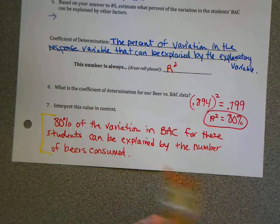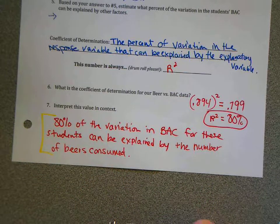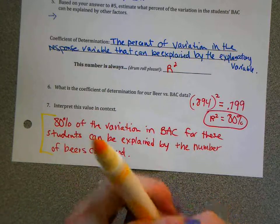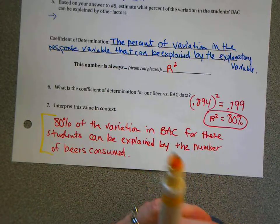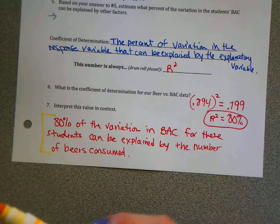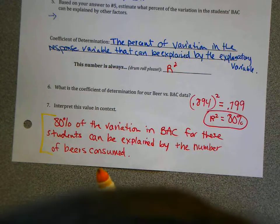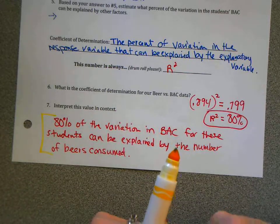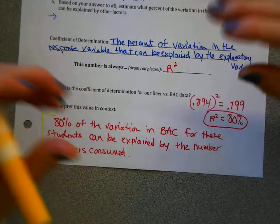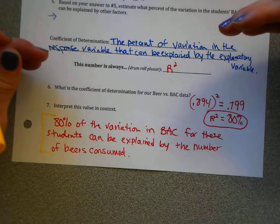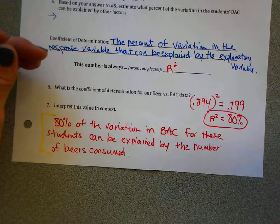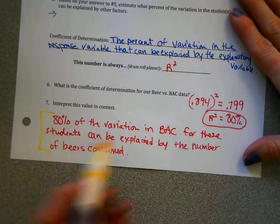What are we really saying here? We're saying that beers is not the only thing that is attributing to the changes in blood alcohol content. There are other contributing factors. But it's a very good predictor. 80% is pretty high. Meaning that it does a good job of explaining why there's variation.